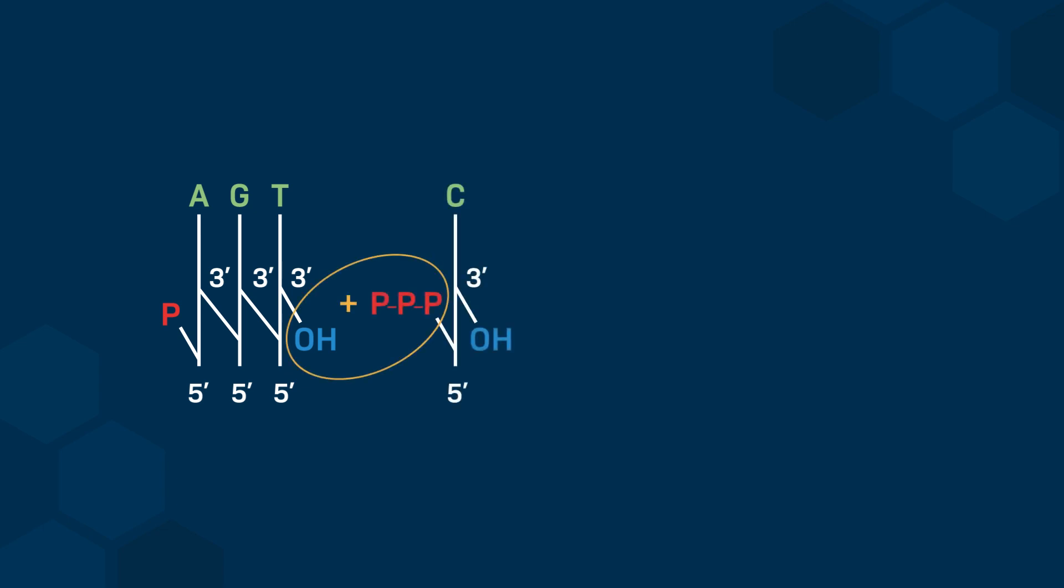This free hydroxyl group will form a phosphodiester linkage with the phosphate carried by the 5' carbon of an incoming deoxyribonucleotide. This covalent linkage will lead to the incorporation of this incoming nucleotide.